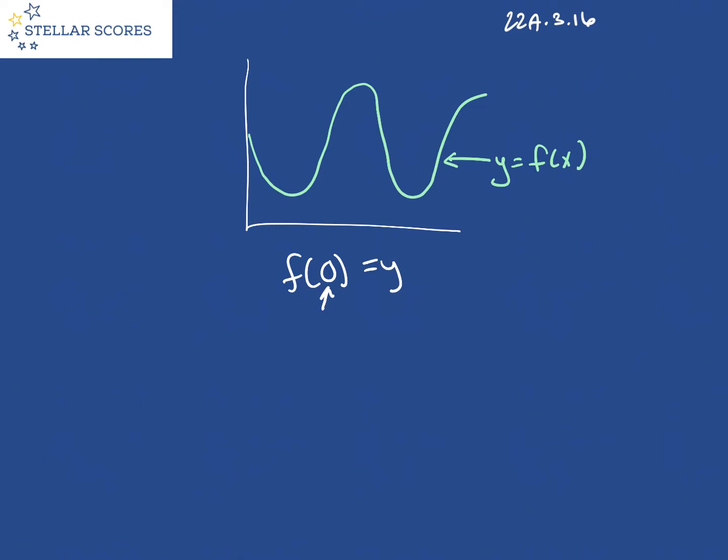So when x is 0, come over here, x is 0 here. We just want to find what is the value of y when x is 0, and looking at our graph, that should be 3. So at the value of x equals 0, the value of y is 3. That's your answer.